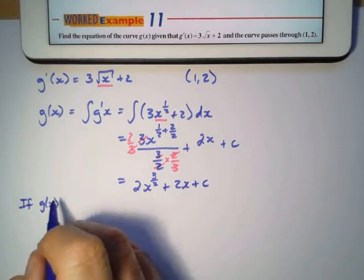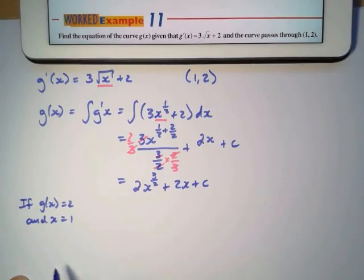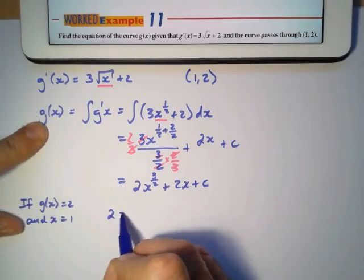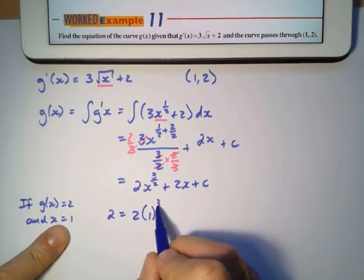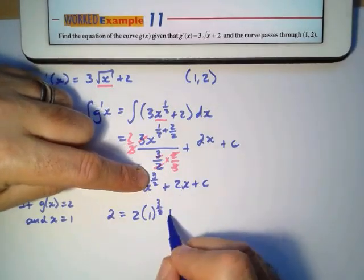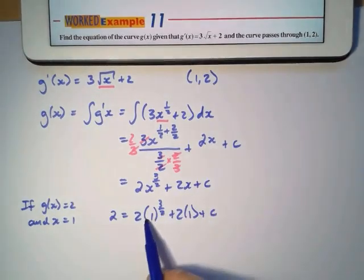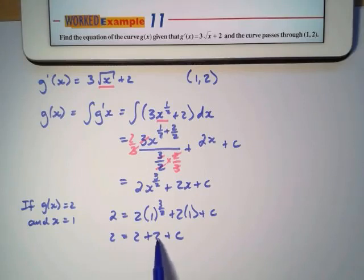So I'm going to say, if g(x) equals 2 and x equals 1, I'm going to substitute g(x) as 2 equals 2 times x as 1. 1 to any power is 1. So this will be 2 equals 2 plus 2 plus C. 2 plus 2 is 4. 2 equals 4 plus C.